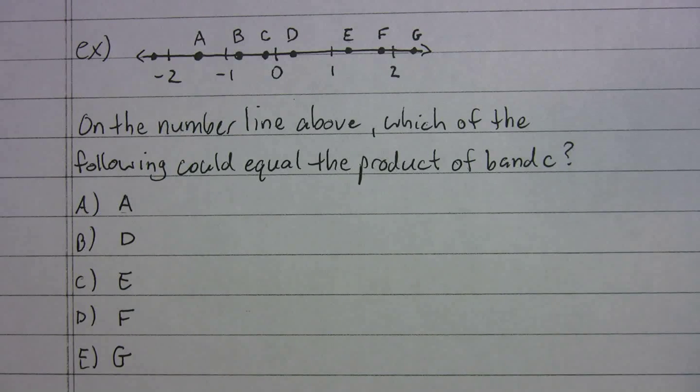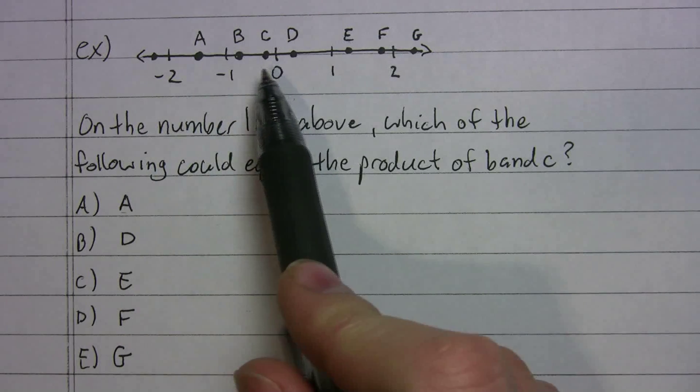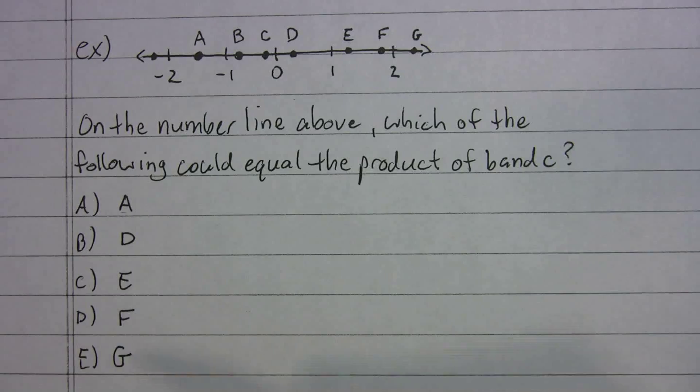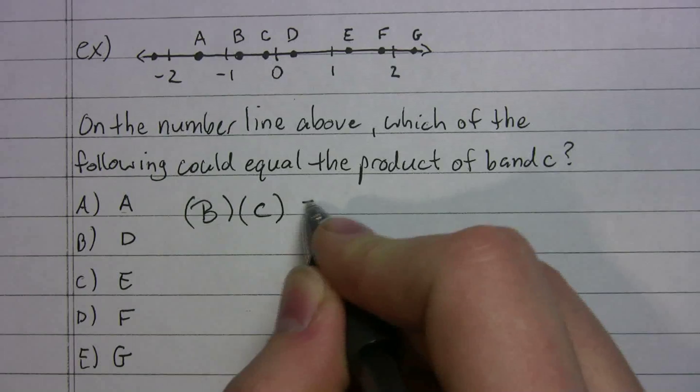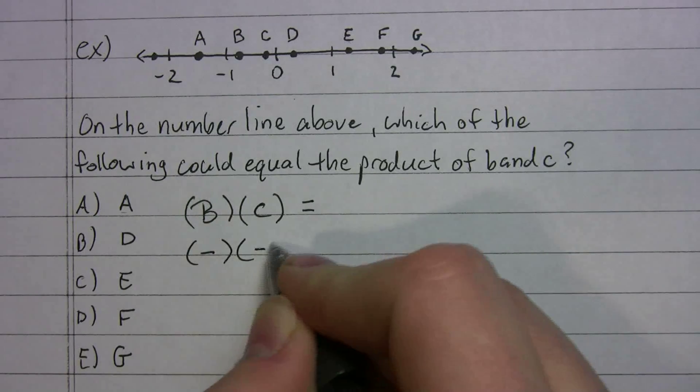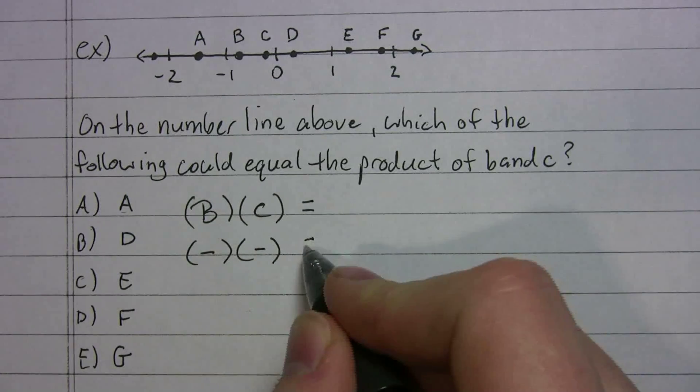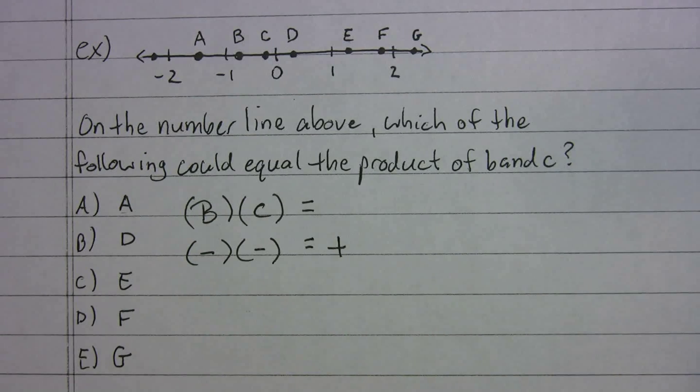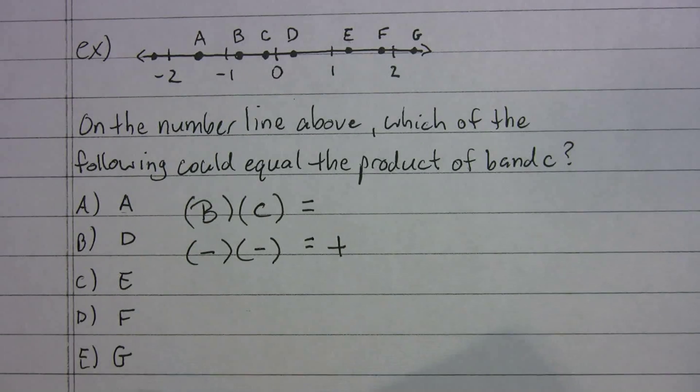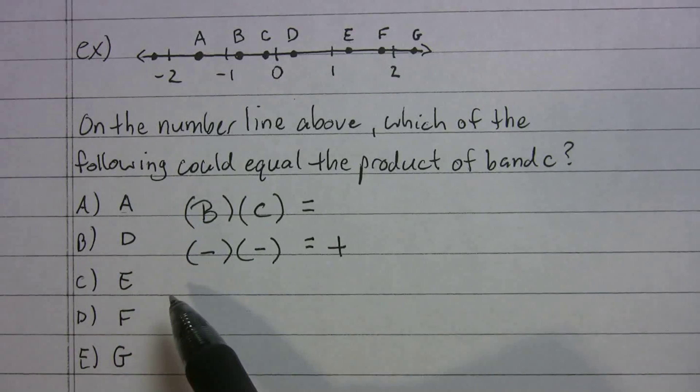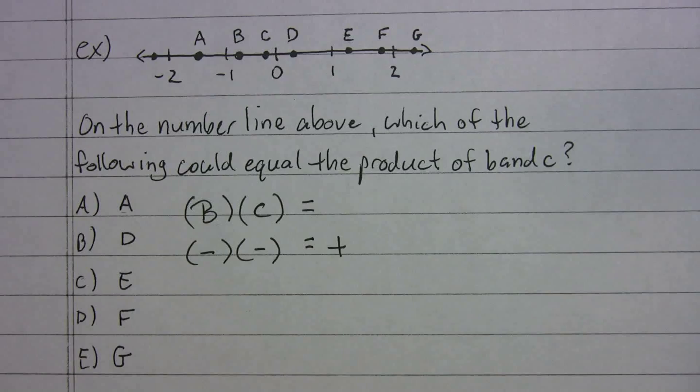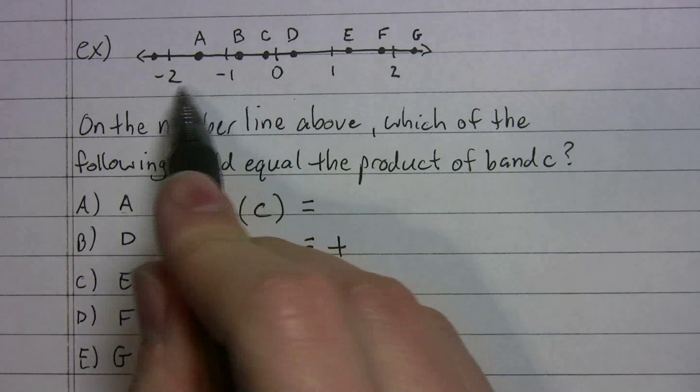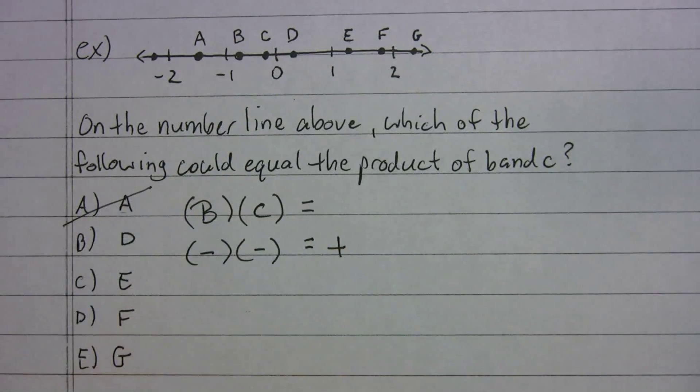So we'll take a look at the number line. And what do we know about b and c? They're both negative, right? So we'll write that. We're looking for the product. So b times c, it's going to be a negative times a negative. We know a negative times a negative gives us a positive. So if that's the case, if we're looking for a positive, a is negative, right? It's between negative 2 and negative 1. So a is gone. So we've already eliminated a choice.